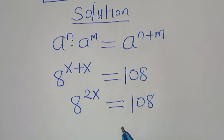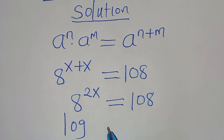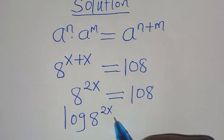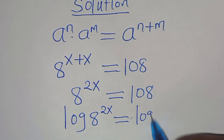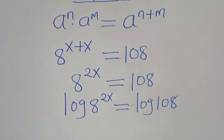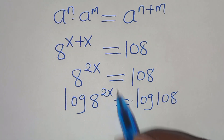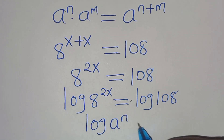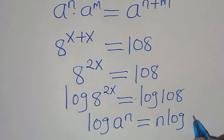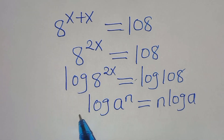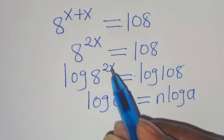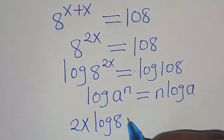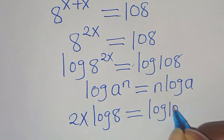To solve for x here, we introduce logarithm on both sides, such that we have log of 8 to the power of 2x, this is equal to log of 1/8. Now log 8 to the power of 2x is in the form of log a to the power of n, which can be expressed as n log a. Applying this power property, then log 8 to the power of 2x becomes 2x log 8, this is equal to log 1/8.